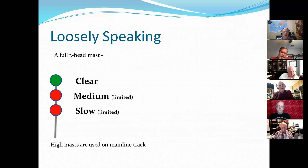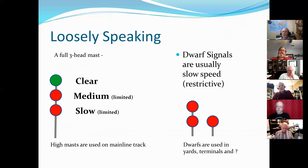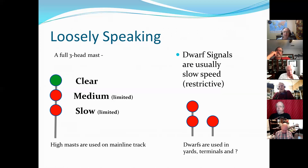High masts are used on the main line track, so we have clear, medium, and slow — or high, medium, and slow — or max speed for the high signal. Dwarf signals are usually slow speed, which is some type of restriction. Dwarf signals are used in yards, terminals, and some other places depending on requirements. Sometimes they're mounted on elevated platforms or the side of a bridge where there's no clearance for a regular high mast. But as a general rule, dwarfs are slow speed indications.